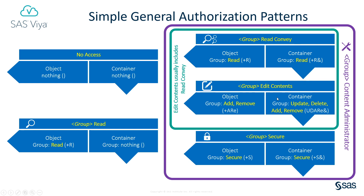To implement the group edit contents pattern, grant this group the add and remove permissions on the object itself, and the update, delete, add and remove permissions on the object's container. This allows the group to add and remove objects from the folder, to modify and delete the contents of the folder, and to add or remove objects from any subfolders. To implement the group secure pattern, grant the group the secure permission on the object itself, and the secure permission on the object's container. These are not the only repeatable authorization patterns possible, but we're focusing on them in this video because they're the simplest and most common.